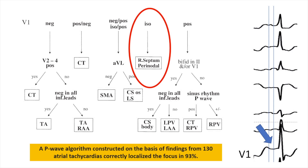The authors in this study constructed an algorithm based on P wave morphology from 130 atrial tachycardias. The accuracy of the algorithm is around 93 percent. When we look closer at our ECG, we see that the P wave polarity in lead V1 is isoelectric, and when we go back to the algorithm, we see that this is a sign for the location of the atrial tachycardia very close to the AV node, on the right side of